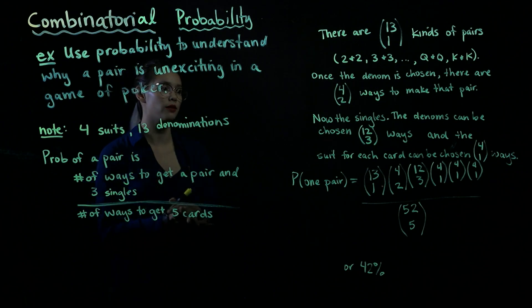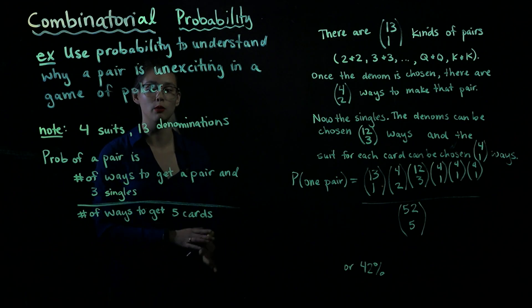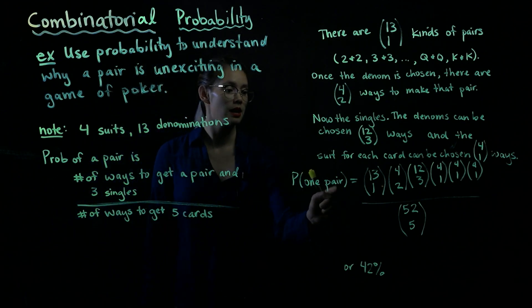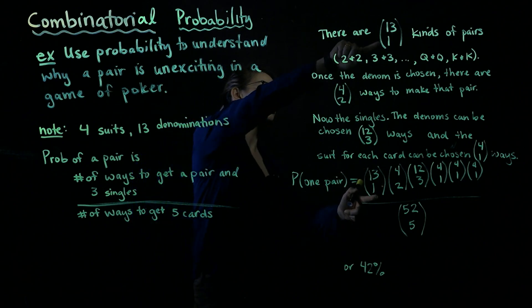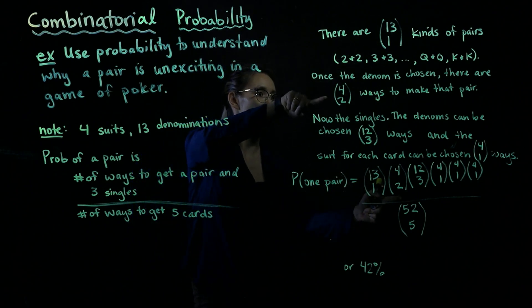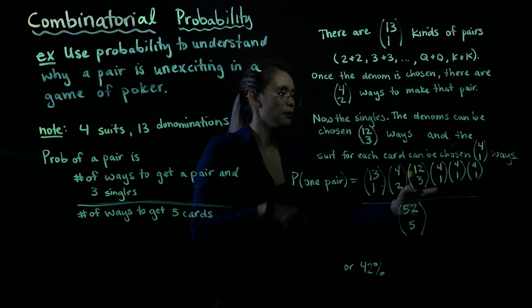So the denominations can be chosen 12 choose 3 ways, and then the suit for each one of these cards can be chosen 4 choose 1 ways. Now we have everything we need to calculate this probability.